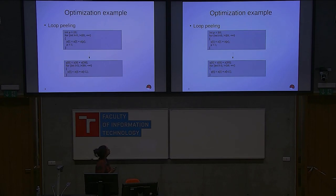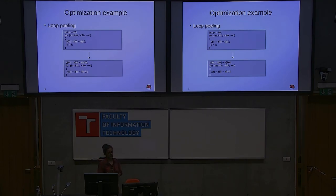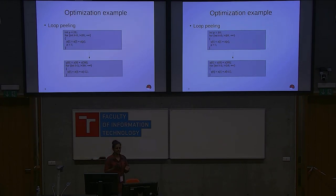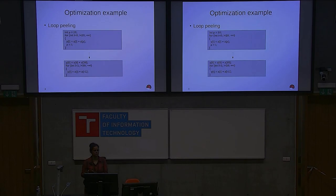Then we have loop peeling, where we try to vectorize in a format that allows parallel execution — the idea is to parallelize the computation. Regarding compiler optimization flags, there are three levels: -O1, -O2, and -O3. In the first level, mostly machine-independent optimizations happen. In the second level, it's a combination of machine-independent and machine-dependent. The third level is pretty advanced and mostly machine-dependent.